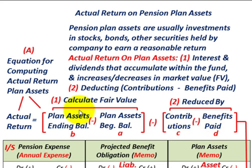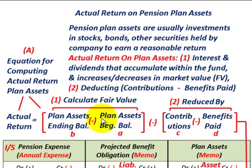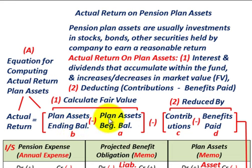For calculating our fair value, we would need to know our plan assets' beginning balance and calculate the fair value, which includes any interest or dividends tied to these assets. Then we compare it to the plan assets' ending balance — again at fair value. The difference between the ending balance and the beginning balance gives us the first component of the actual return on these plan assets.